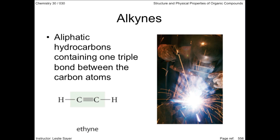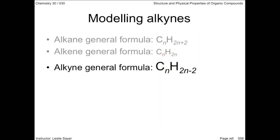The acetylene torch, or oxyacetylene torch, is used for welding, cutting, and shaping metals. The two fewer hydrogens than alkenes gives alkynes a general formula of CnH2n-2.